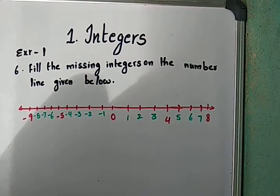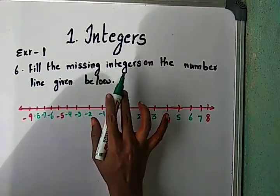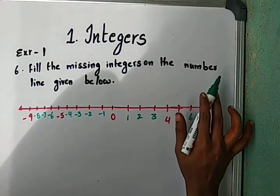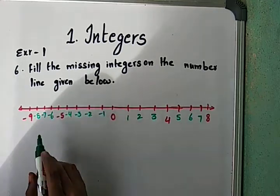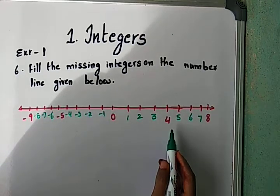Now, fill the missing integers on the number line given below. Here they gave some integers with some missing.